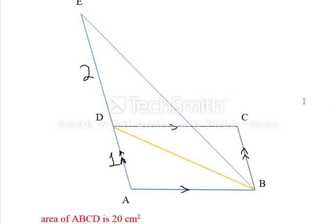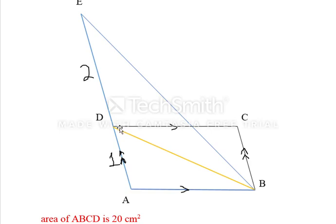Coming back to the original diagram: we have drawn line segment BD, which is a diagonal of the parallelogram. The diagonal of a parallelogram divides the total area into two equal parts. Since the area of the whole parallelogram is 20 centimeter square, the area of triangle ABD is 10 centimeter square.